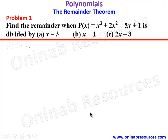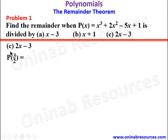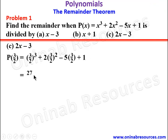For c, we find p of 3 over 2. Equating 2x minus 3 to 0 and dividing both sides by 2, x becomes 3 over 2. We substitute 3/2 wherever we see x: 3/2 cubed plus 2 times 3/2 squared minus 5 times 3/2 plus 1. This gives 27 over 8, then 9 over 2, then minus 15 over 2, plus 1.